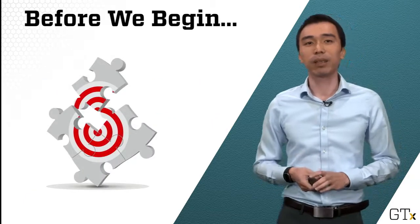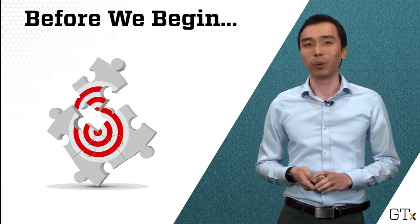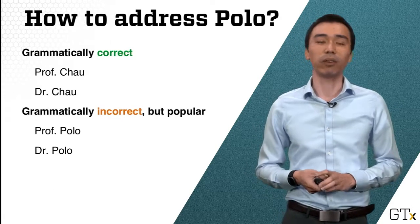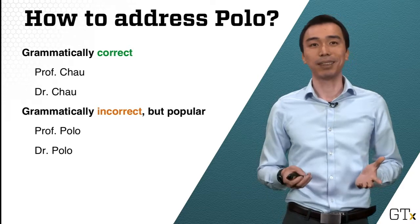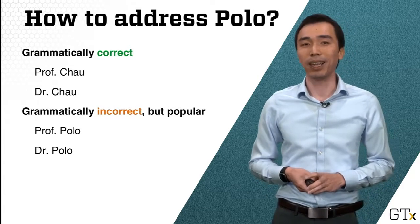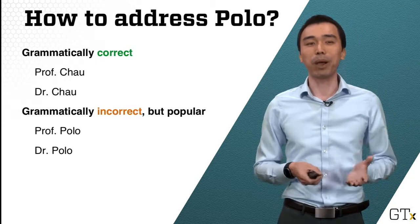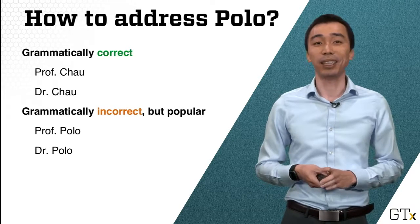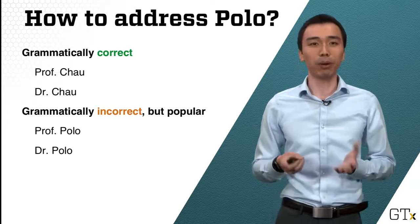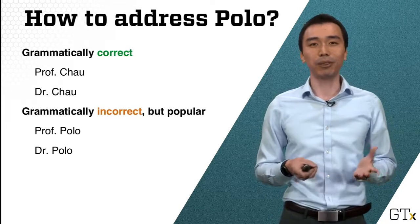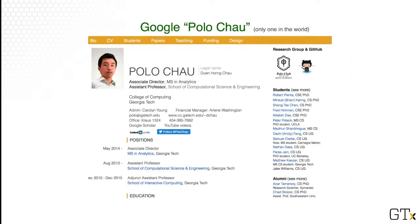Today we're going to cover some introductory information about this class. A lot of students wonder how to address me — there are two ways. The correct way would be Professor Chao or Dr. Chao, and the incorrect but very popular way is Professor Polo or Dr. Polo. It's actually up to you. If you want to know more about my professional life, you can just Google Polo Chao and see everything from my publications to my research group. Everything is open book.